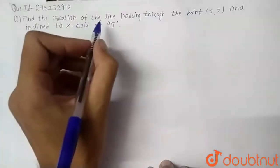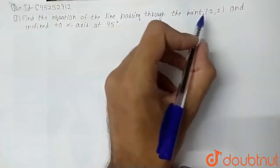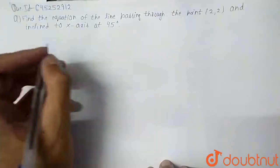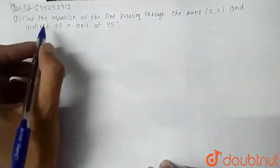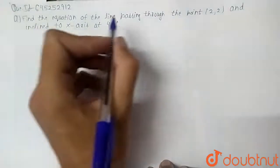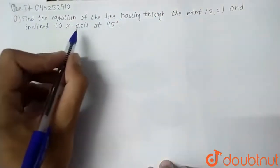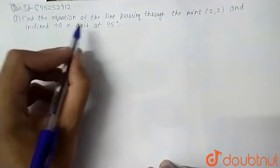Find the equation of the line passing through the point (2, 2) and inclined to x-axis at 45 degree. Basically in this question, we have to find the equation of line which passes through the point (2, 2) and the angle is 45 degree towards x-axis.